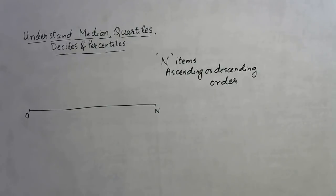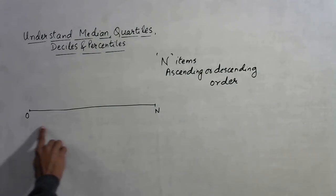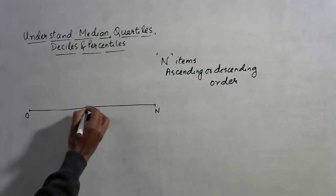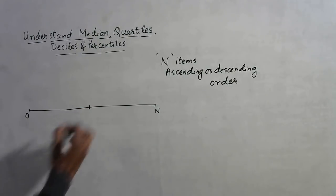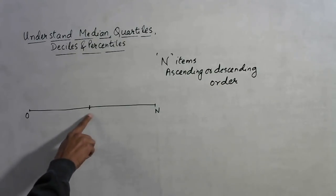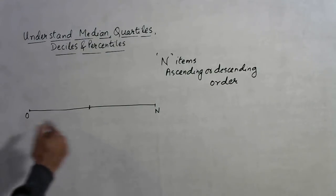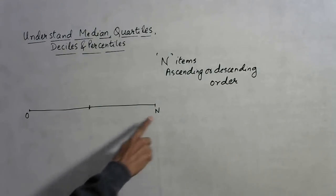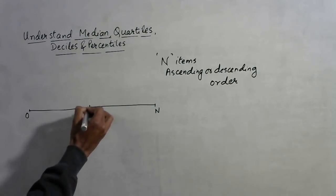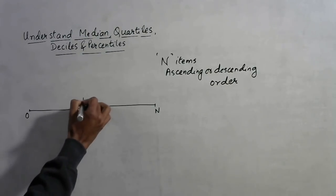It is very important that the items are already arranged in ascending or descending order. When the items are arranged, the center — that is the value below which 50% of values lie and above which the other 50% of values lie — is the value which divides the data range into two equal halves. This value is called the median.